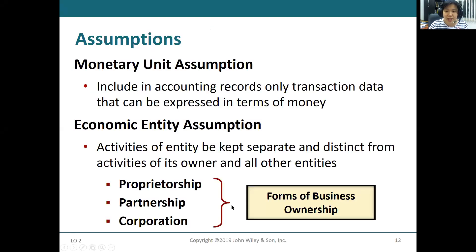There are two types of business ownerships — actually three: proprietorship, partnership, and corporation. Proprietorship means the business is owned by one person. For example, if I open a bookstore and I'm the only owner, that is a proprietorship. If my friend and I open a hair salon together, that is called a partnership. Partnership means the business is owned by two or more people.